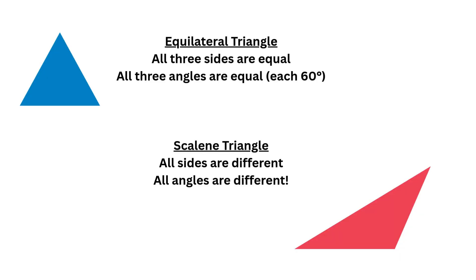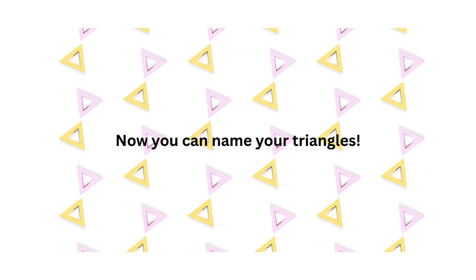Our equilateral triangle — this is a really easy one to remember — all the angles and all the sides are equal, and they will always be 60 degrees. Therefore it's an equilateral triangle. And then finally, a scalene triangle is completely the opposite: all the sides are different, all the angles are different. So if you've got a triangle where each angle is a different size, it would be a scalene triangle.